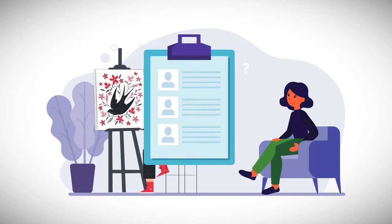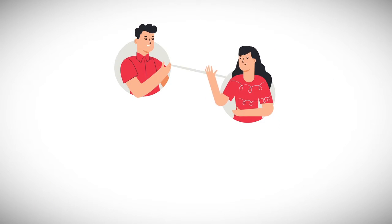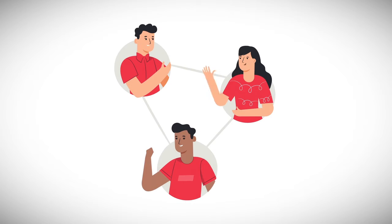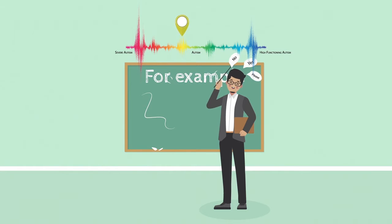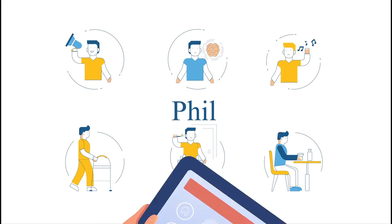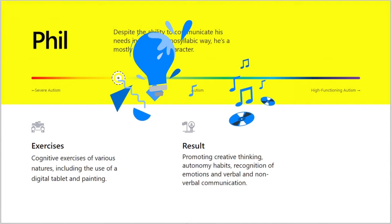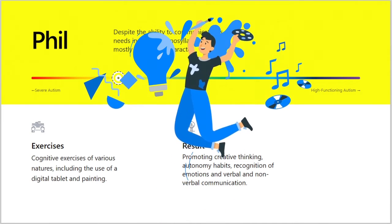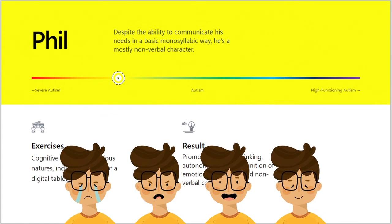While there were certain similarities in the results, like substantial improvement in communication and social skills, each participant's outcome differed. For example, despite Phil's ability to communicate his needs in a basic monosyllabic way, he is mostly non-verbal. My work with Phil involved stimulating him with cognitive exercises of various natures, including the use of a digital tablet and painting. Specifically, the use of these apps and painting sessions demonstrated a positive effect on creative thinking, autonomy habits, recognition of emotions, and verbal and non-verbal communication.